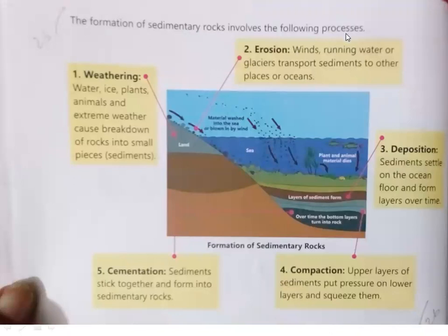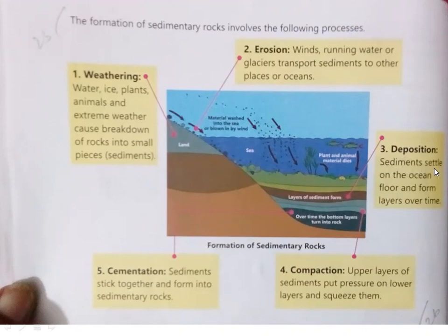The formation of sedimentary rocks involves the following processes. Number 1: Weathering — water, ice, plants, animals and extreme weather cause breakdown of rock into small pieces called sediment. Number 2: Erosion — winds, running water and glaciers transport sediments to other places or oceans. Number 3: Deposition — sediments settle on the ocean floor and form layers over time. Number 4: Compaction — upper layers of sediments put pressure on lower layers and squeeze them. Number 5: Cementation — sediments stick together and form into sedimentary rock.